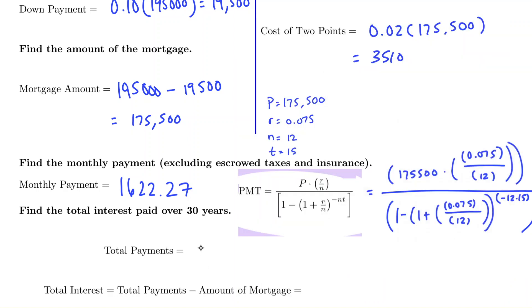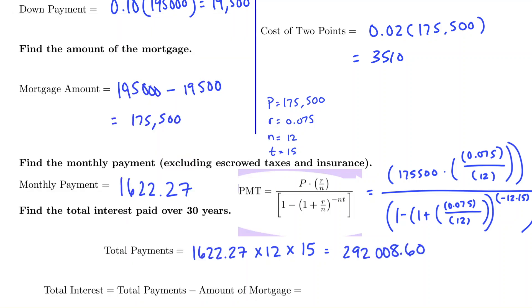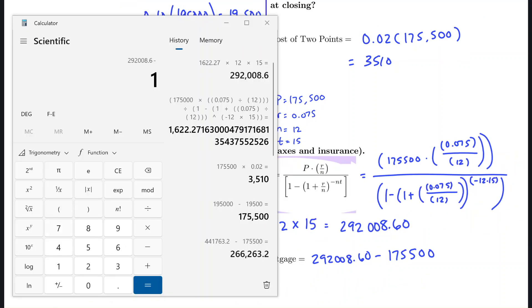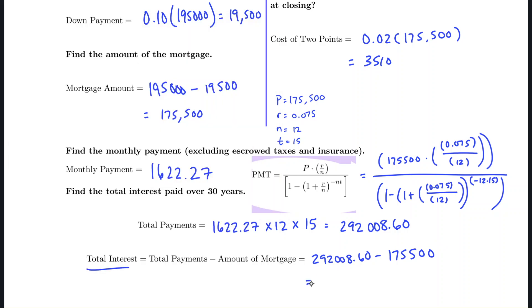To calculate total payments for the 15-year loan, we take the monthly payment of $1,622.27 times 12 times 15, giving us $292,008.60. To find total interest paid, we subtract the original mortgage of $175,500 from total payments, and we find we paid $116,508.66 in interest over the life of the loan.